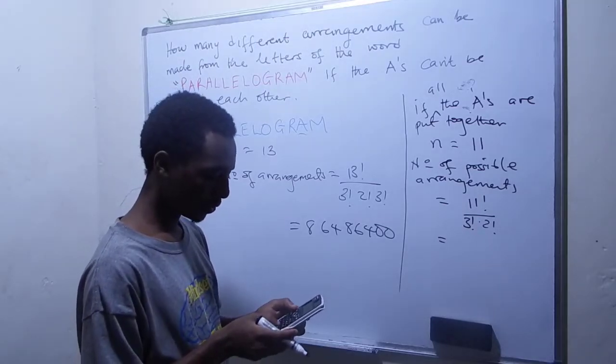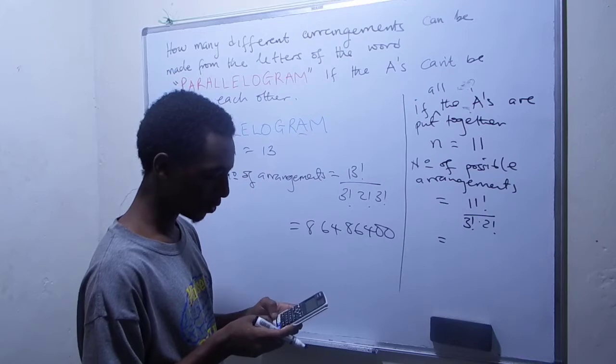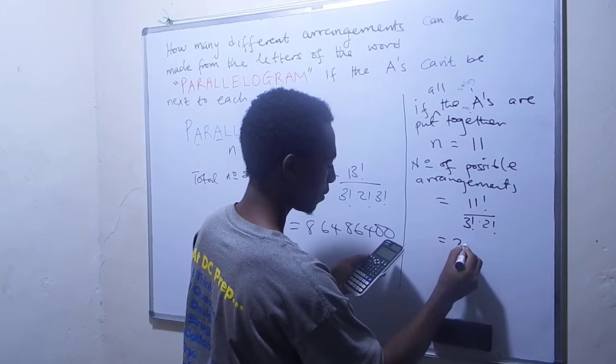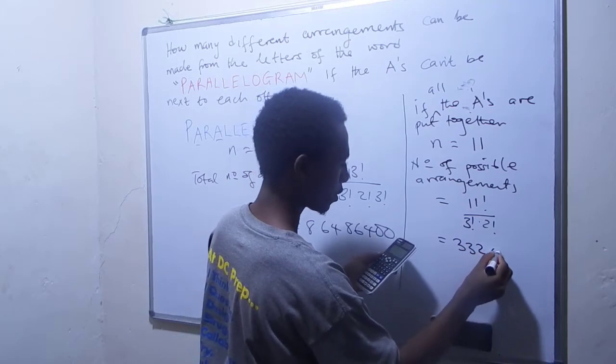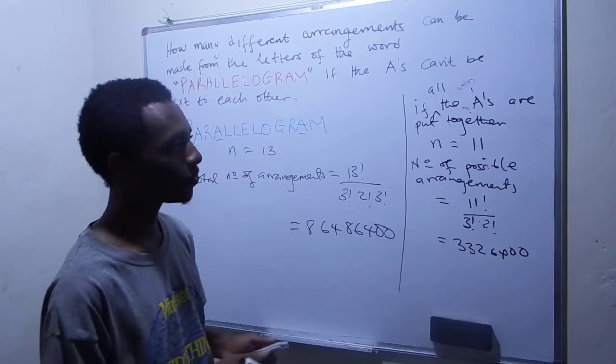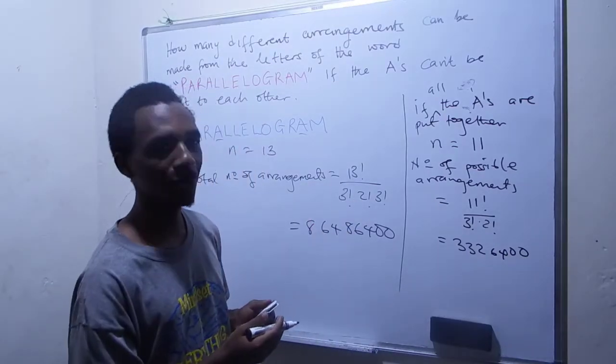So that's 11 factorial divided by, so we have 3 factorial, which is 6, and 2 factorial, which is just a 2. So we'd have 3, 3, 2, 6, 4, 0, 0. So that's the total number of possible arrangements that we can make if we put the A's together.